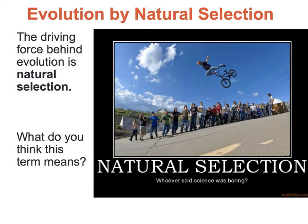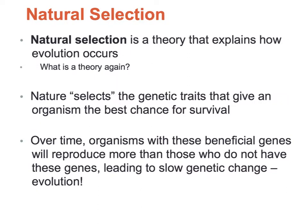Evolution is based on the fact that organisms have different traits in a population. Nature basically chooses those traits that are better suited for an environment, and that is called natural selection. Natural selection is the force behind evolution — there are differences in populations, and nature is going to choose those traits that are better suited for a given environment. That is the theory that explains how evolution occurs.